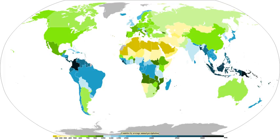Moisture that is lifted or otherwise forced to rise over a layer of sub-freezing air at the surface may be condensed into clouds and rain. This process is typically active when freezing rain occurs. A stationary front is often present near the area of freezing rain and serves as the focus for forcing and rising air. Given necessary atmospheric moisture, the rising air will condense into clouds, namely stratus and cumulonimbus.